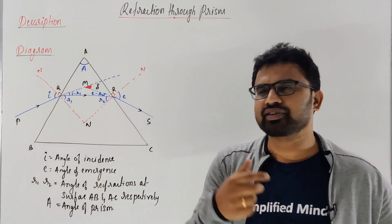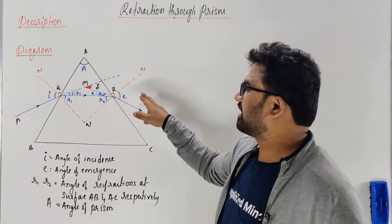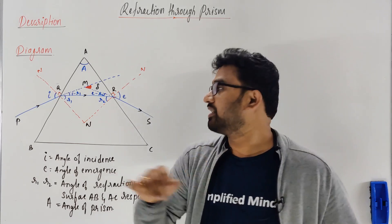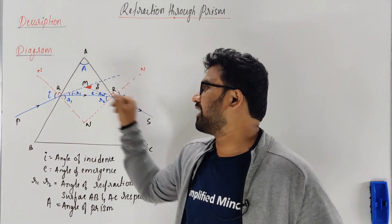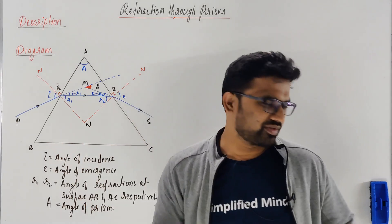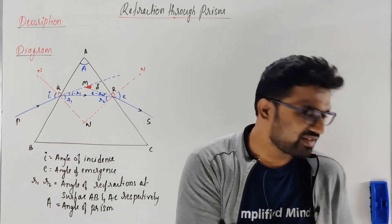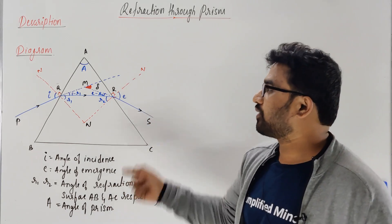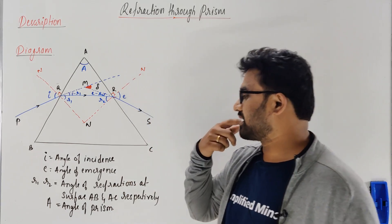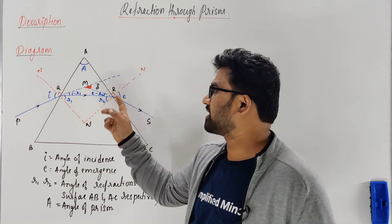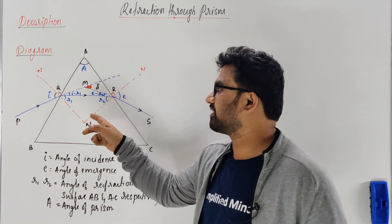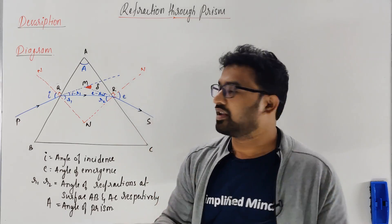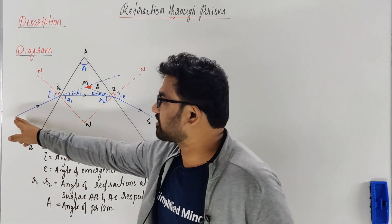Some textbooks take the angles as I1 and I2 — no problem. Since NCRT gives it as E, I took it as E. So R is E. Now, what is the deviation here? What is delta? Imagine that suppose the prism was not there — the ray would go straight through.